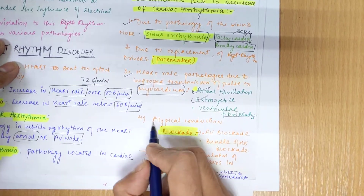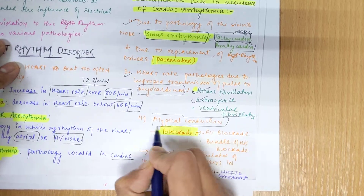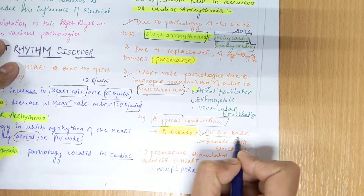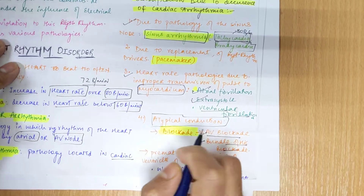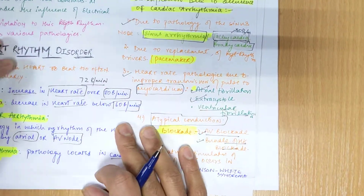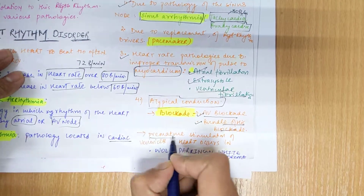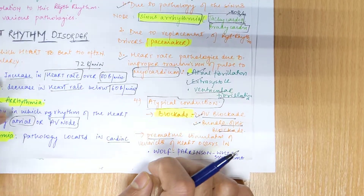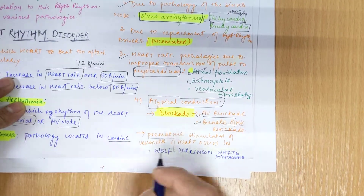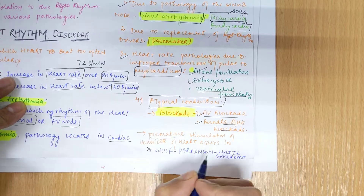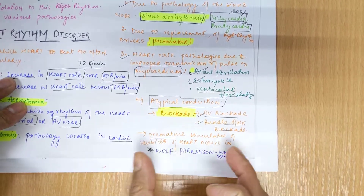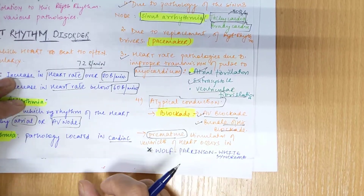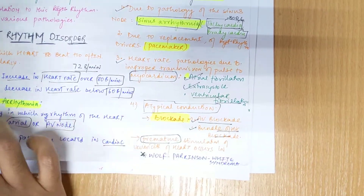The fourth case involves atypical conditions — any blockade in the AV node or bundle of His. There are pathologies related to that: AV blockade, bundle of His blockade, left bundle branch blockade, or right bundle branch blockade. There can also be premature stimulation of ventricles, which occurs in a pathology called Wolff-Parkinson-White syndrome, where you see premature ventricular rhythm. This was the basic classification.